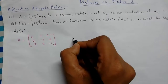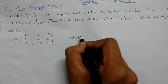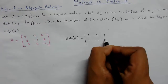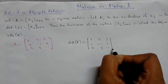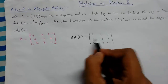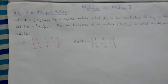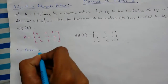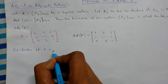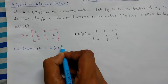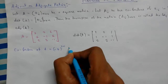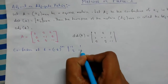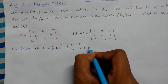Let us consider the determinant det(A), written as: 1, 2, 1 / 1, -1, 1 / 2, 3, -1. Now we need to find the cofactors of all the elements. Starting with the first element, cofactor of 1: (-1)^(1+1) times the minor, removing row 1 and column 1, leaving us -1, 1, 3, -1, which gives us -2.